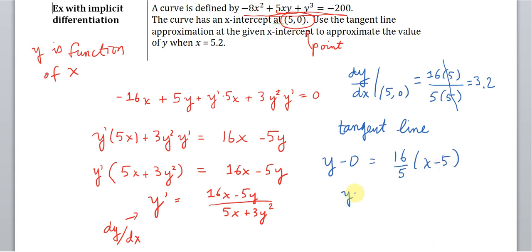Okay. So this is just y equals 16/5 times (x - 5). So using this equation in order to figure out what's the value of y when x is equal to 5.2.